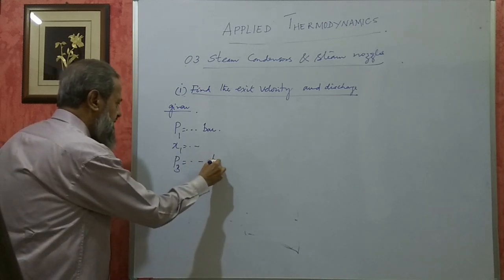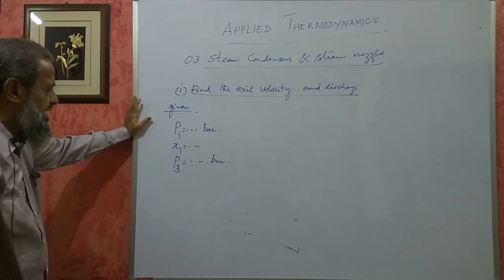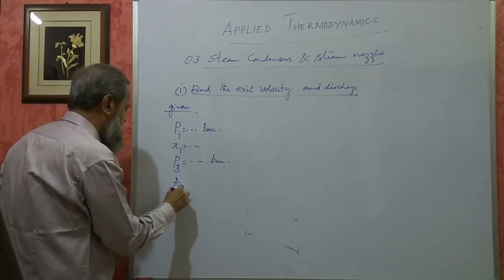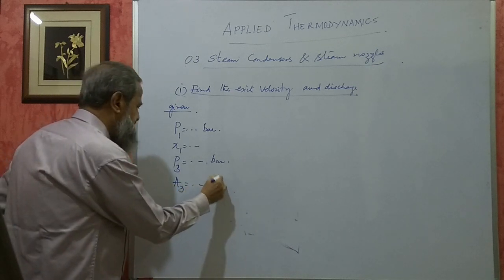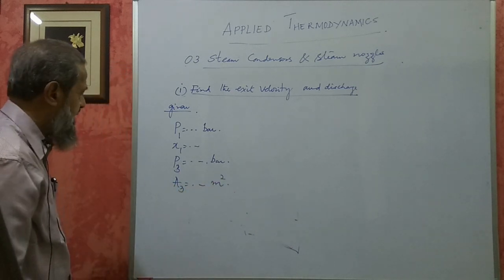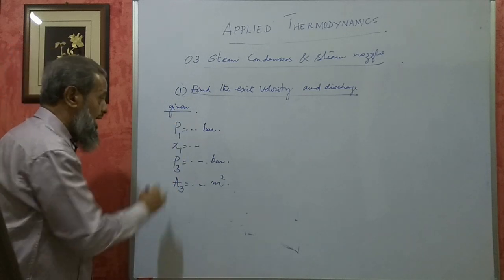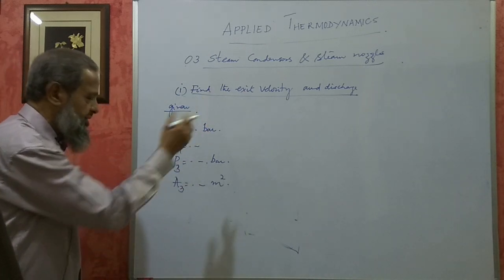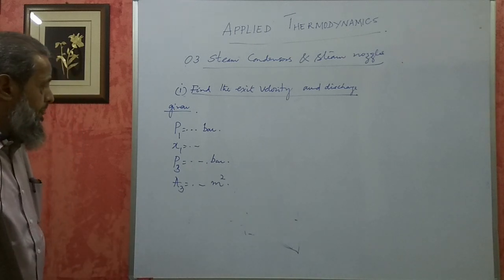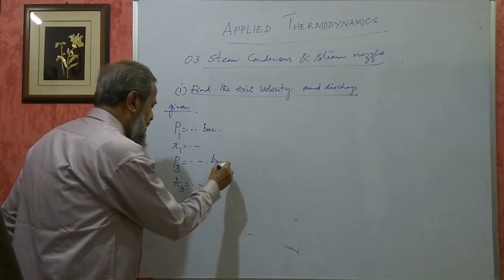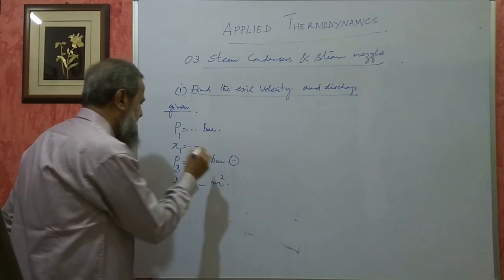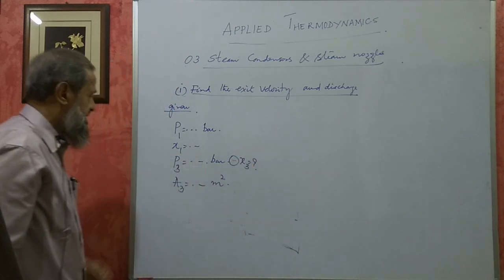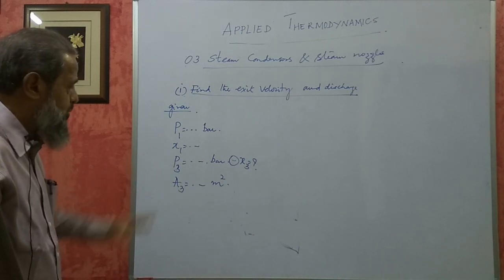P3 will generally be given in bar. If they want discharge, they will give you the area at exit A3 in square meters. If area A3 is given they will ask discharge; if discharge is given they will ask area at exit A3. Here we need not worry what type of nozzle it is. The first thing we have to do is find out the condition of steam at exit.